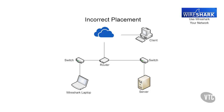The following image shows the incorrect placement of Wireshark if you want to capture communication between the external client and the server. The Wireshark laptop and the switch it is connected to will not see traffic destined for the server because it is routed to the server's switch.